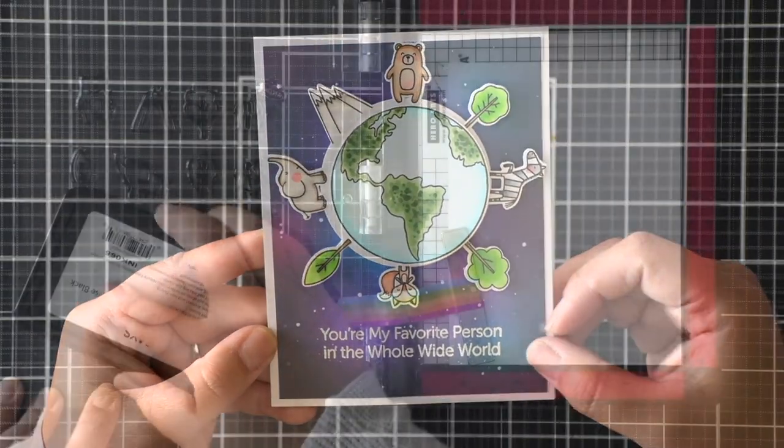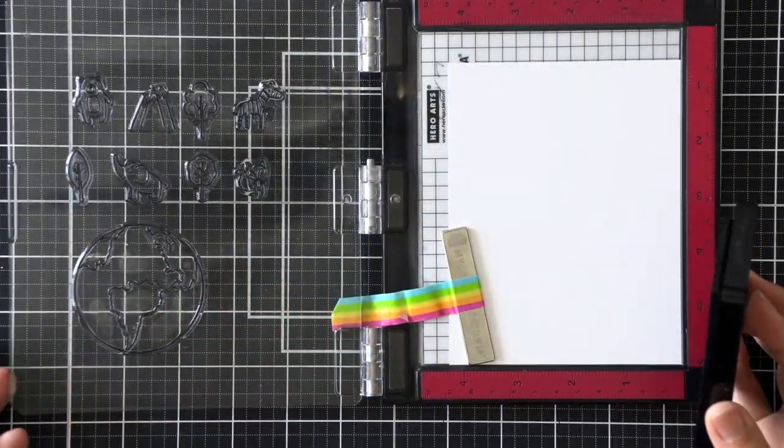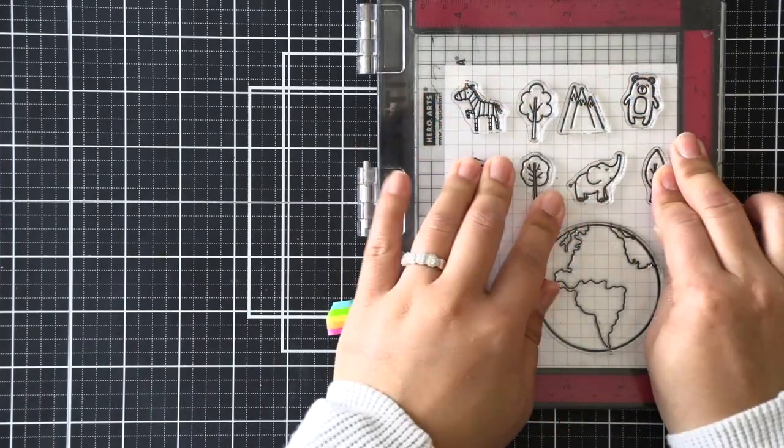I was very intentional about choosing four animals as well as four landscape style images to have perfect spacing all around this globe that I'm coloring now.